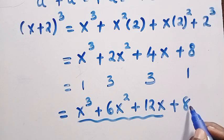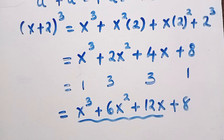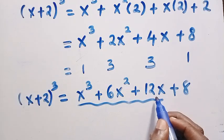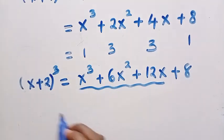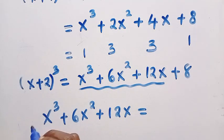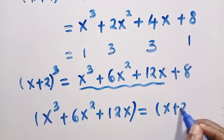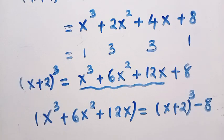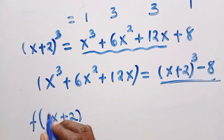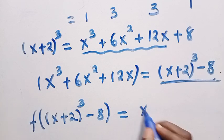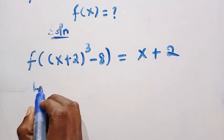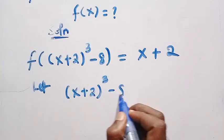It is now easy for us to isolate the plus 8. Therefore, if we recognize everything as x plus 2 raised to power 3, by making x cubed plus 6x squared plus 12x only, we transfer the 8 to the other side. So x cubed plus 6x squared plus 12x equals x plus 2 raised to power 3 minus 8. The new function now becomes f of x plus 2 raised to power 3 minus 8 equals x plus 2. We let x plus 2 raised to power 3 minus 8 equal y.